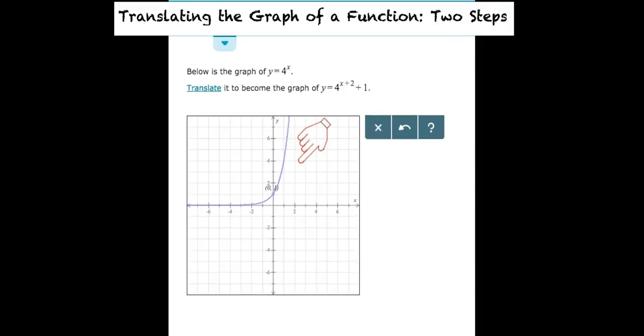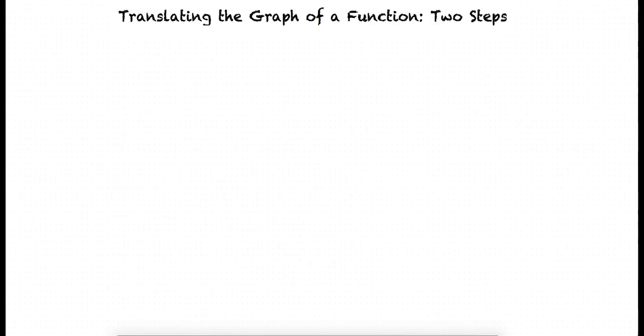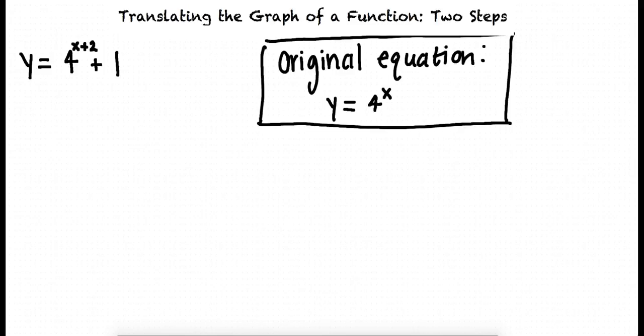First, let's start by identifying what kind of translations we are going to make to this graph. Looking at the translated equation, y equals 4 to the power of x plus 2 plus 1, we can see that there are two operations acting on the original equation of y equals 4 to the power of x. Two is added to the x and one is being added to the function as a whole.